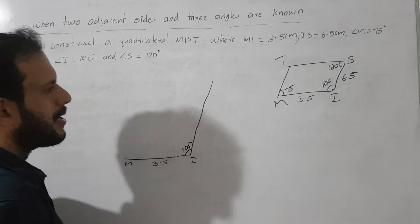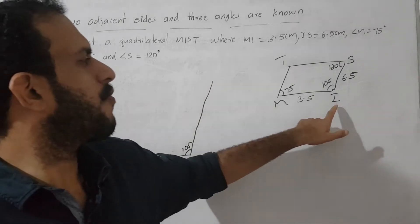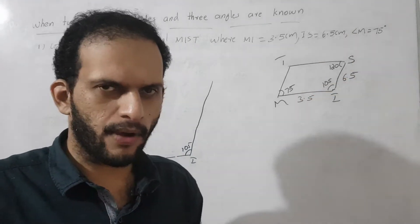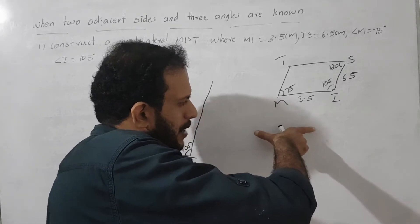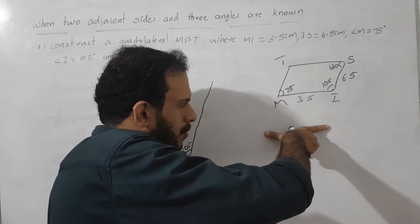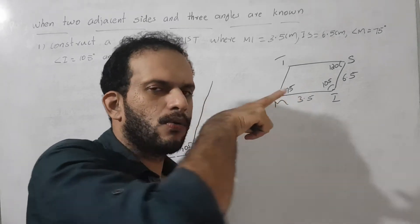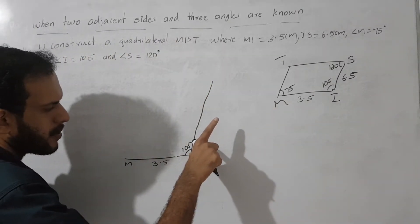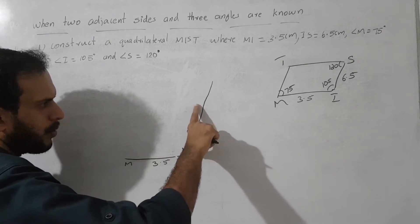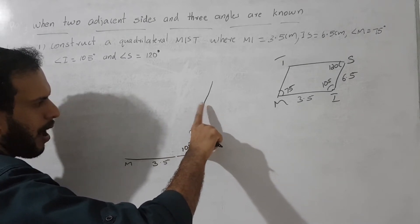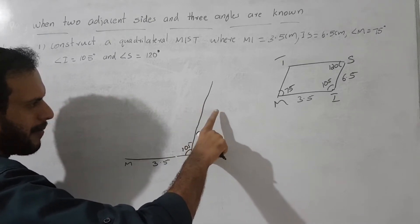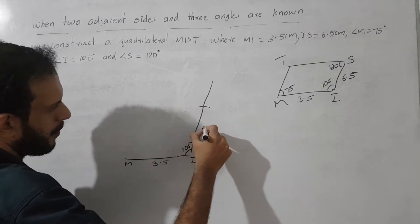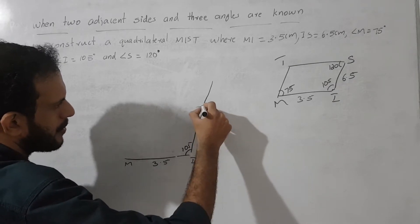We mark 105°, then we know the side value of IS. IS is equal to 6.5 cm. We take the compass and scale, set the compass to 6.5 cm, keep the compass on I, and draw an arc to cut the ray of the angle. This gives us the point S, which is 6.5 cm from I.